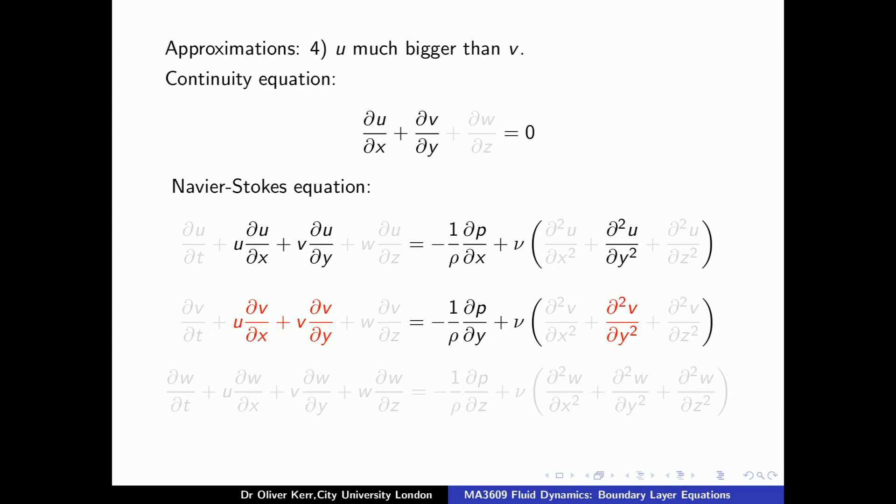We have already seen that d/dy is much bigger than d/dx, and so in the continuity equation we end up with a balance between the du/dx term and the dv/dy term. If we compare the terms in the Navier-Stokes equation, we see that the terms involving u and v in the top equation should be bigger than the corresponding terms in the second equation. However, our argument that y-derivatives are bigger than x-derivatives would indicate that the dp/dy term should be bigger than the dp/dx term. This means that the dp/dy term in the second component of the Navier-Stokes equation should be much bigger than all the other terms. This is only going to be possible if it is essentially zero, and so the second equation will reduce to dp/dy equals zero.